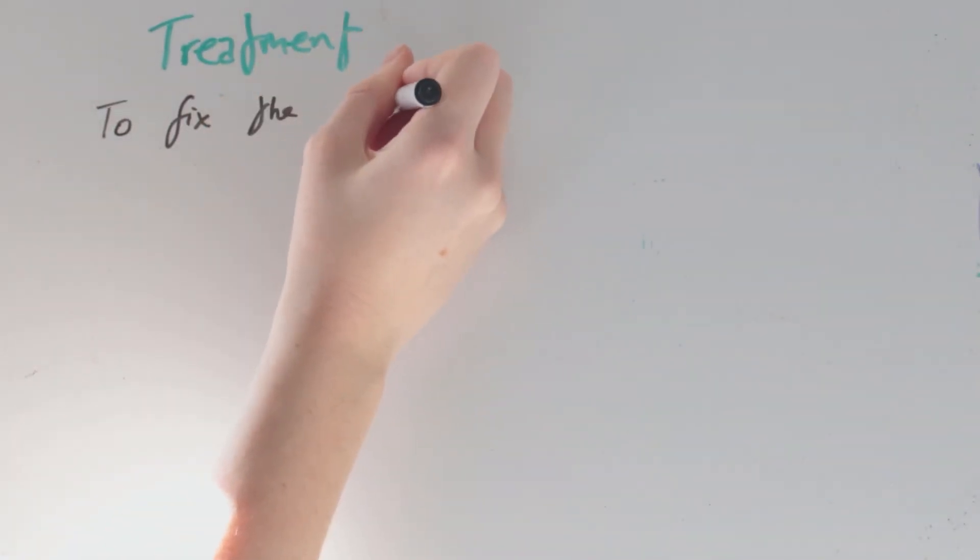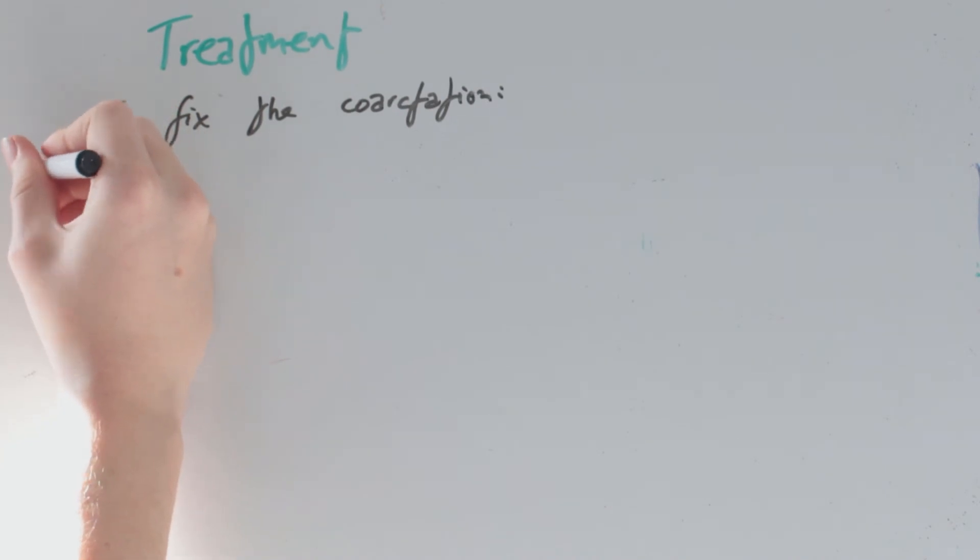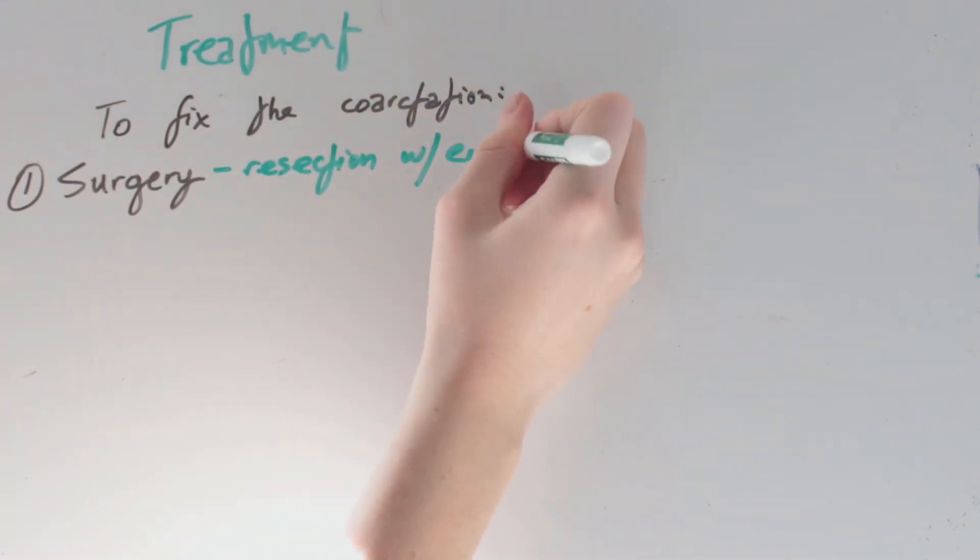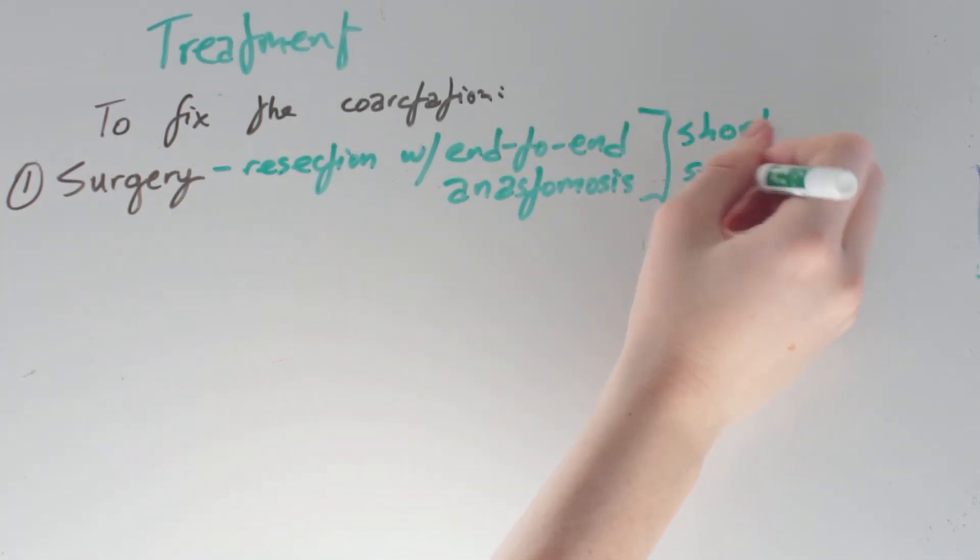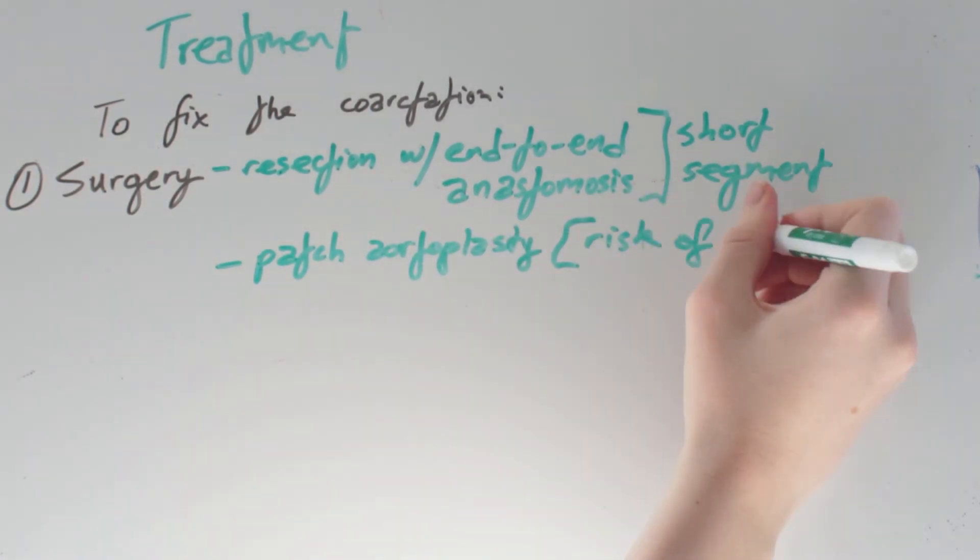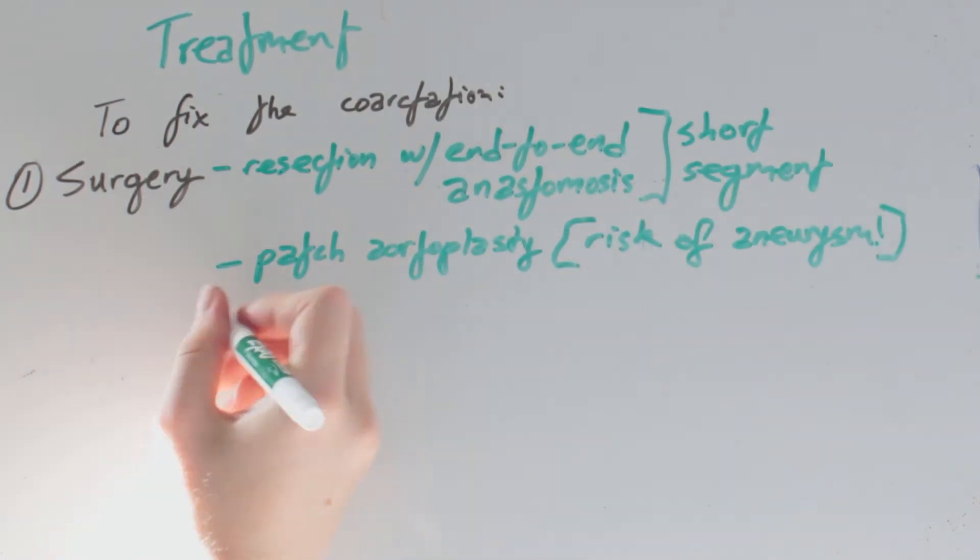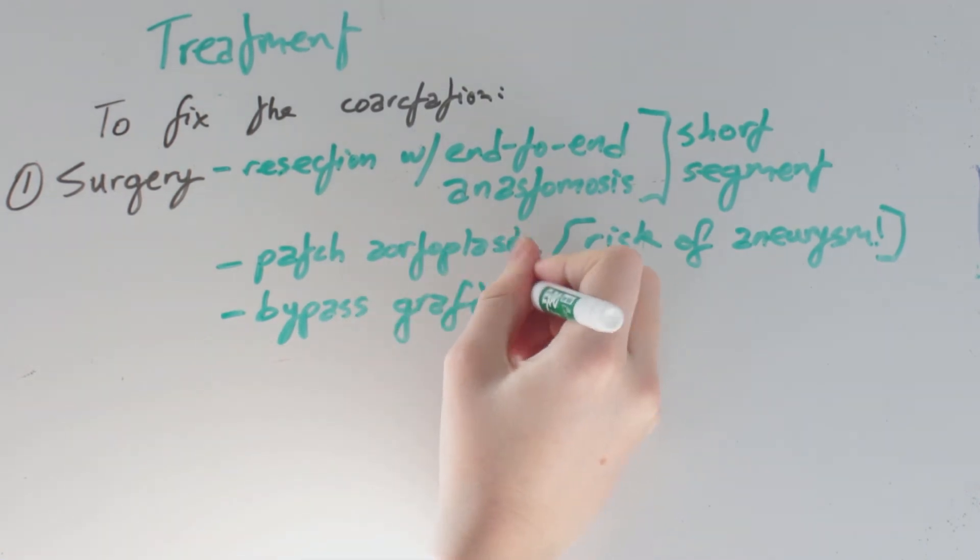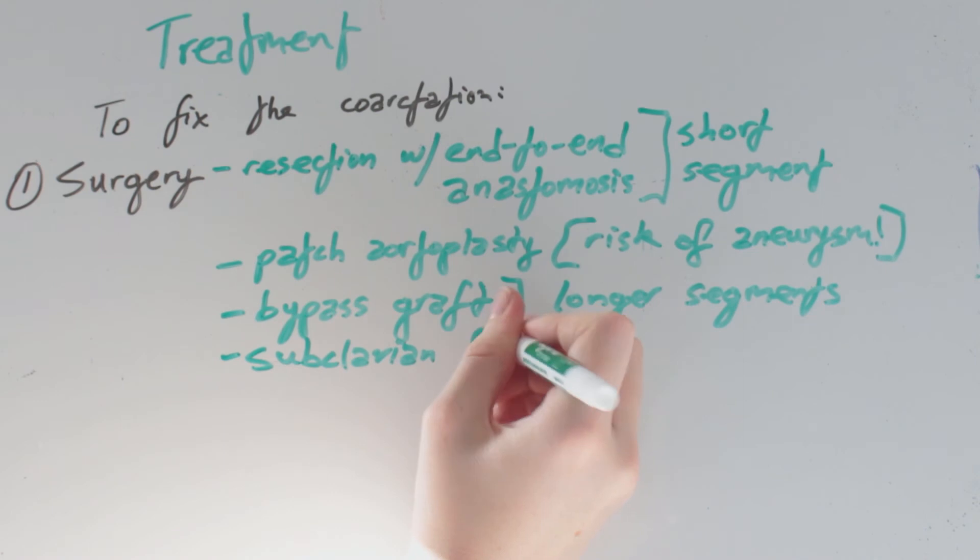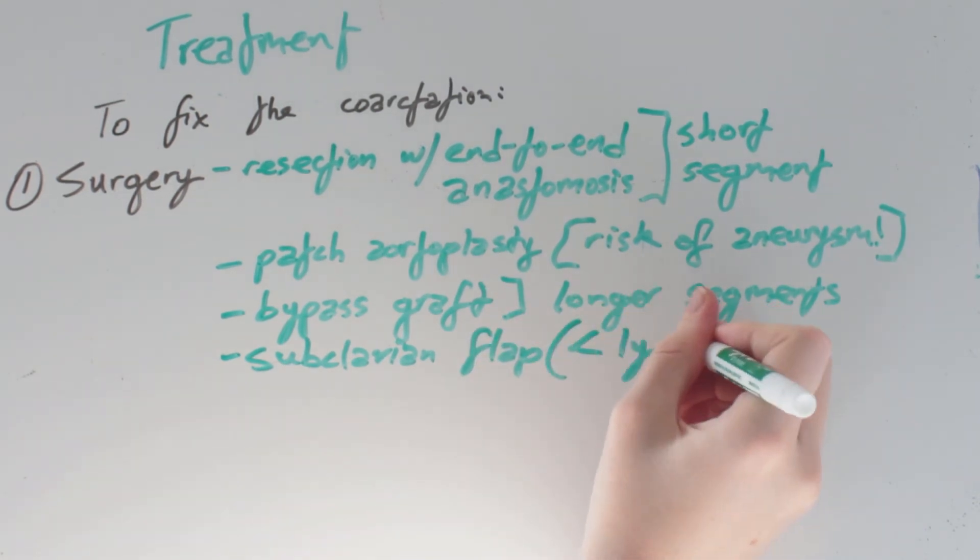To fix the coarctation there are three main options. First, we have surgery, which may include resection with end-to-end anastomosis. This is used when the coarctation segment is short. A patch aortoplasty is an option but carries a risk of aneurysm. A bypass graft can be used for longer segments, and subclavian flap is useful in those younger than one year.